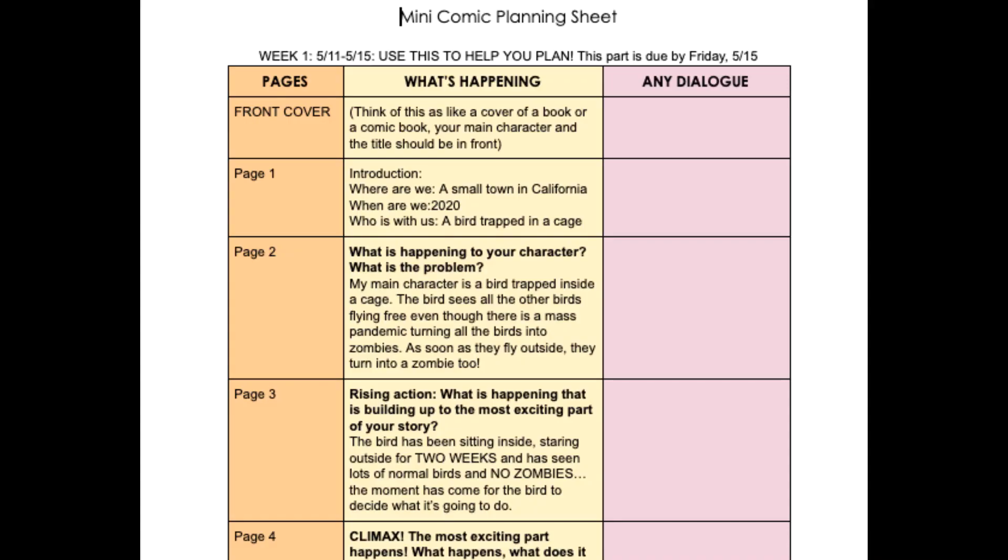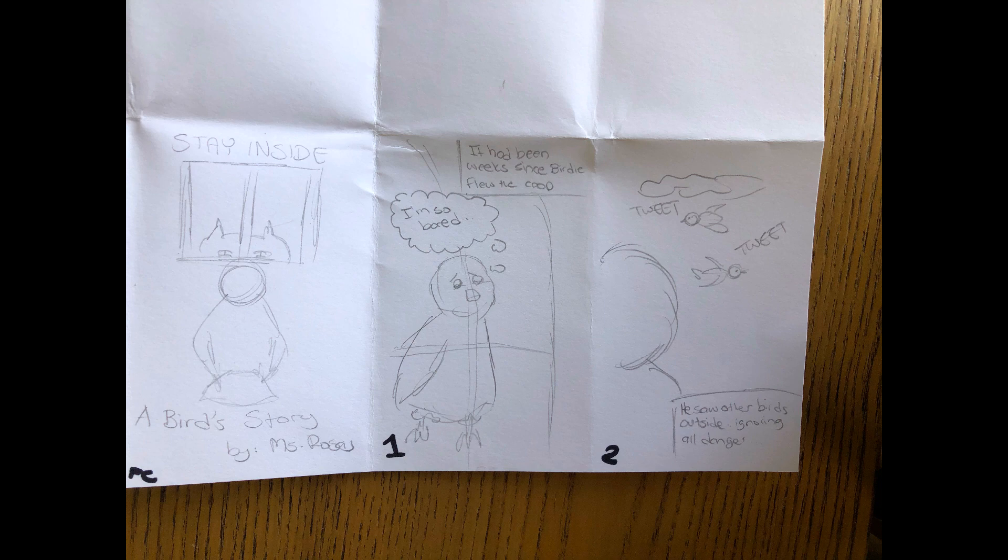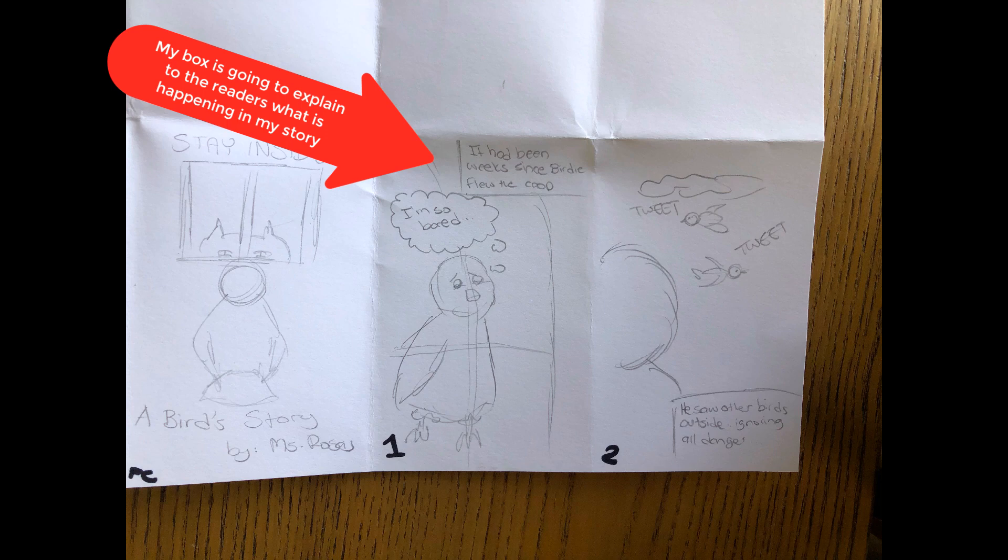Use your comic planning sheet to help you figure out what needs to be drawn in each box. This will help you with what should be on each of your pages. Start by lightly sketching out your designs with pencil. A couple of tips: you can add a rectangular box to help explain what's happening in your story to your readers.